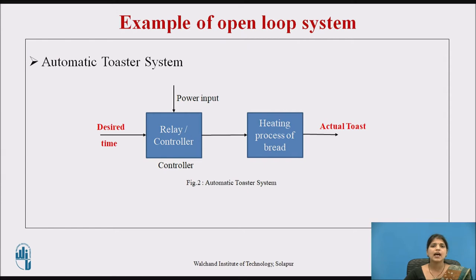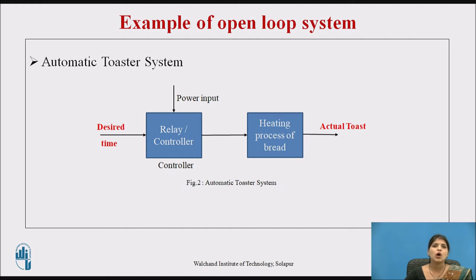We will discuss an example of open loop control system. This is the block diagram of an automatic toaster system. Here relay is the controller and the heating process of bread takes place. The desired time and the power are both inputs to the controller, and the output of the toaster is the actual toast prepared at the last stage. The quality of the toast depends on the time for which the toast is heated and the time setting. Bread is simply heated in the oven and the toast quality is observed by the user and has no effect on the inputs.